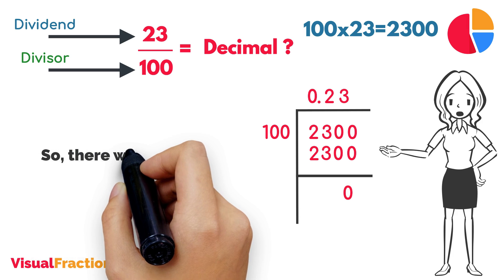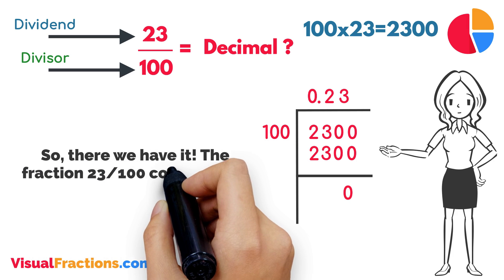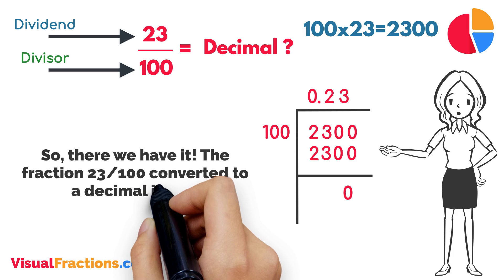So, there we have it. The fraction 23/100 converted to a decimal is 0.23.